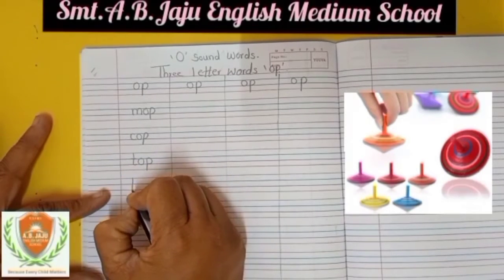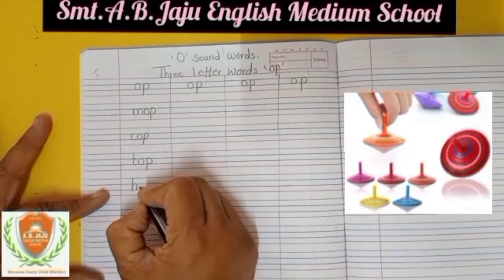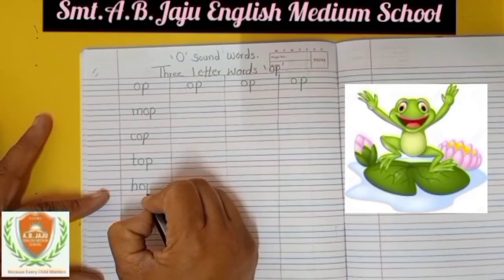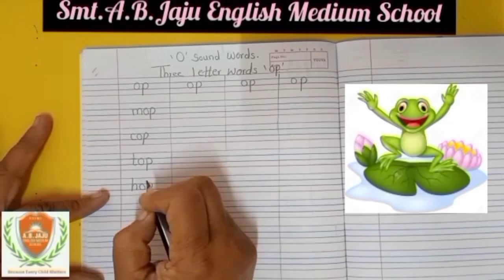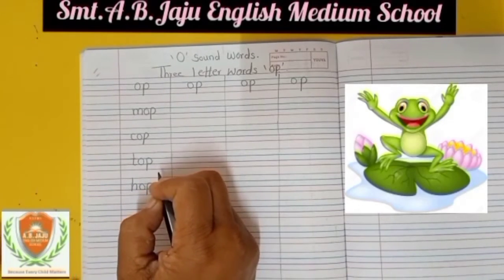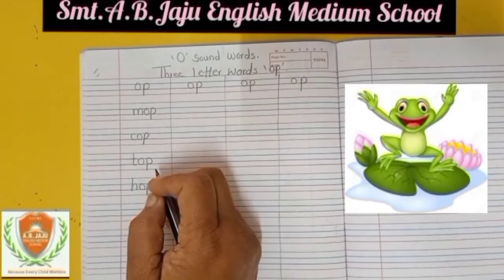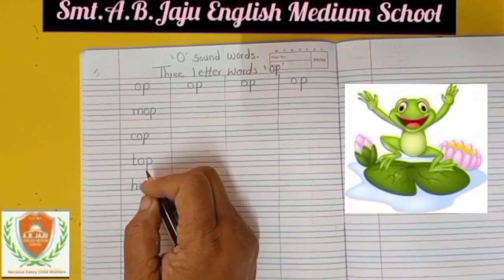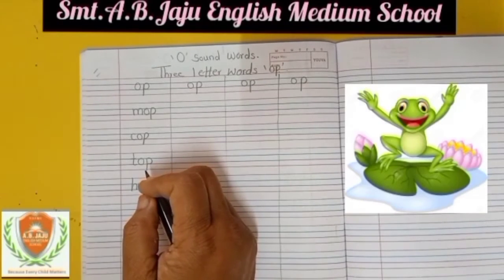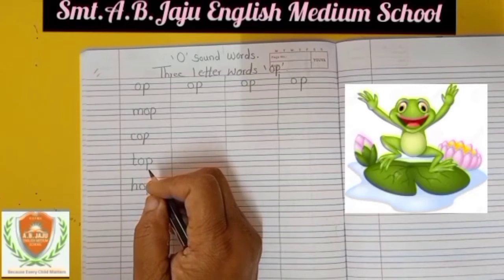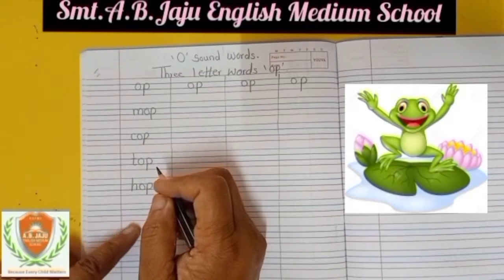Sound of H is H, sound of O is O, sound of P is P — H-O-P, hop. Hop means uchhal na — to jump. See this picture: look how a frog jumps — that is called hop.